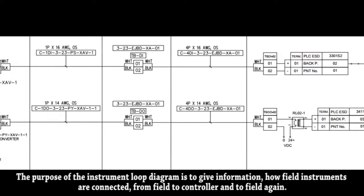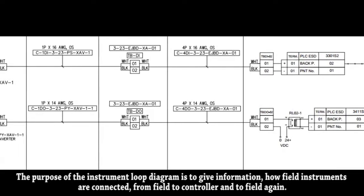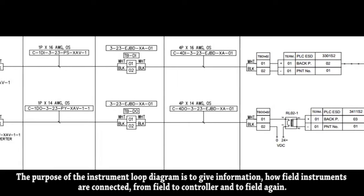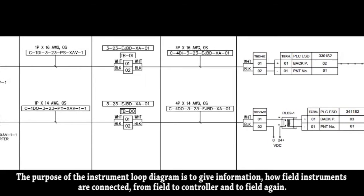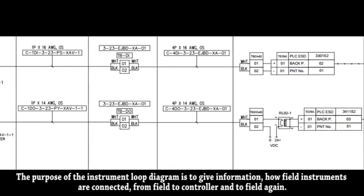The purpose of the instrument loop diagram is to give information how field instruments are connected from field to controller and to field again.